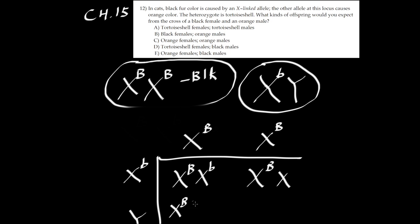Now the rest will be X capital B with Y, X capital B with Y. So right here, this is 100% female with heterozygote, so female with turtle shell.